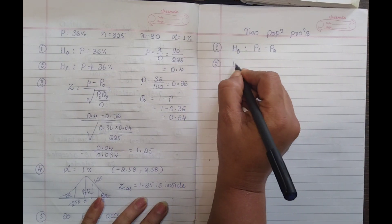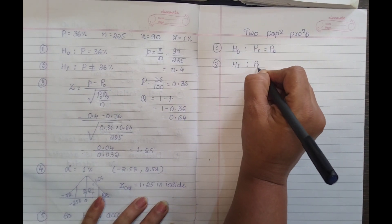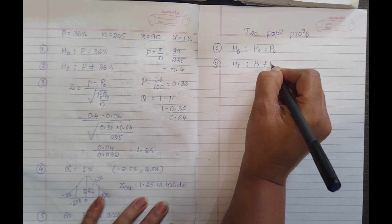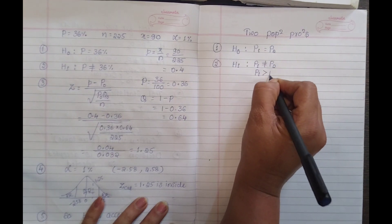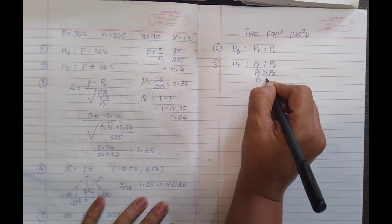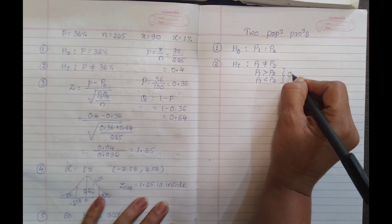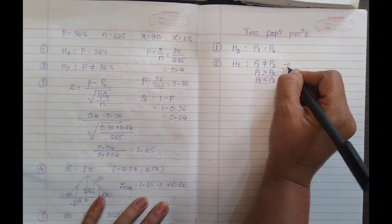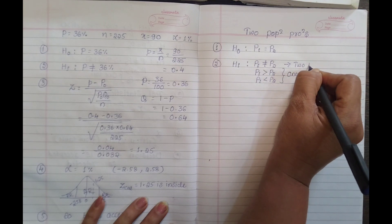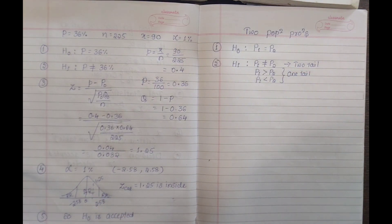The second step is the alternative hypothesis H1. We consider H1 as: P1 is not equal to P2, P1 is more than P2, or P1 is less than P2. The last two are one-tailed tests. The first — P1 not equal to P2 — is a two-tailed test. Always, when the alternative hypothesis uses 'not equal to', it is considered a two-tailed test.